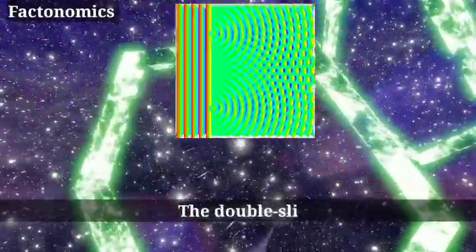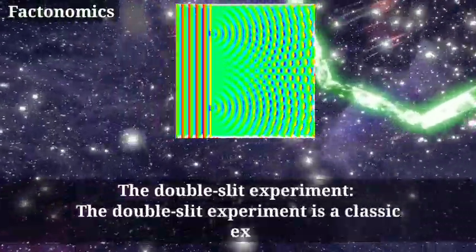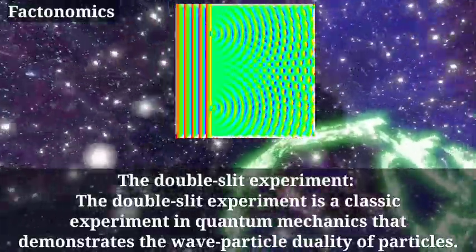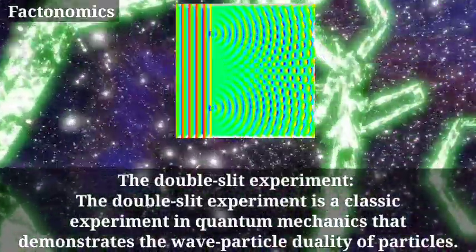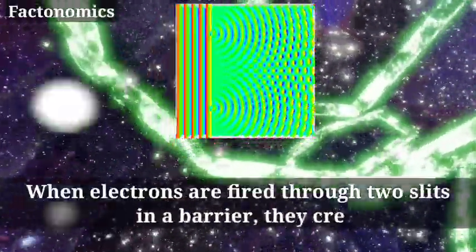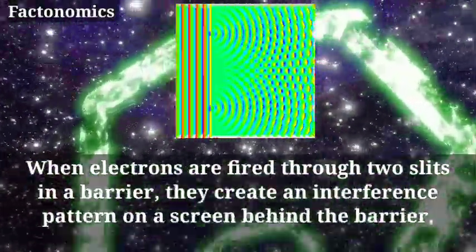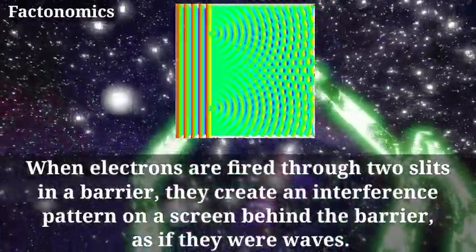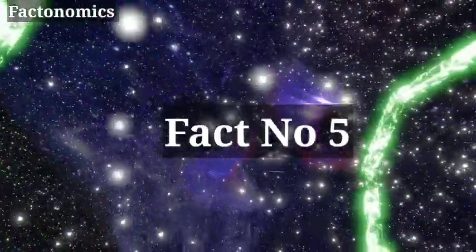Fact number 4. The Double Slit Experiment. The double slit experiment is a classic experiment in quantum mechanics that demonstrates the wave-particle duality of particles. When electrons are fired through two slits in a barrier, they create an interference pattern on a screen behind the barrier, as if they were waves.